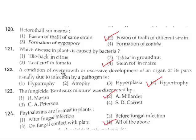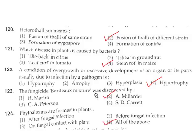Question 122: A condition of overgrowth or excessive development of an organ or its parts, usually due to infection by a pathogen, is called hypertrophy. Option 4. Question 123: The fungicide Bordeaux mixture was discovered by Millardet. Option 2.